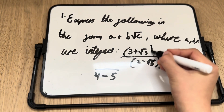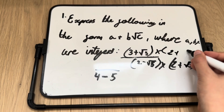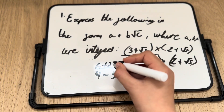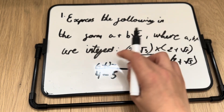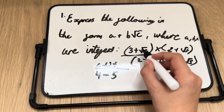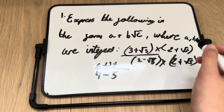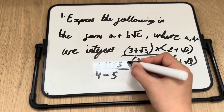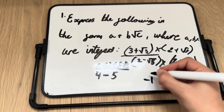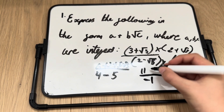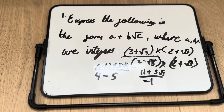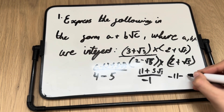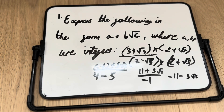Now we multiply the numerator: (3 + √5)(2 + √5) gives us 6 + 5, plus 3√5 + 2√5. Adding those square root terms gives 5√5. The denominator 4 − 5 = −1, and 6 + 5 = 11, so we have (11 + 5√5) divided by −1. Dividing by −1 makes everything negative, giving the final answer: −11 − 5√5.